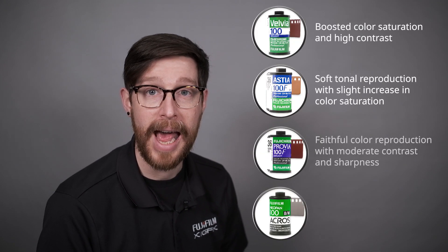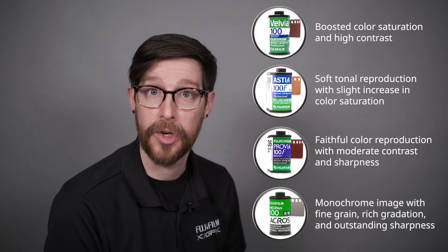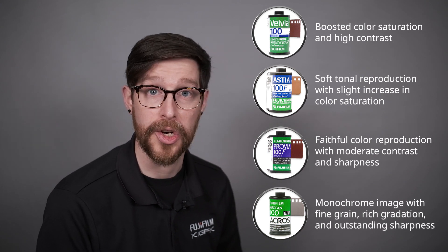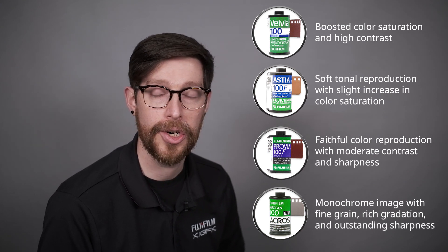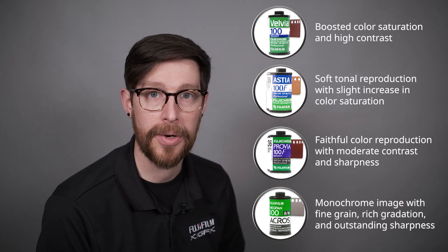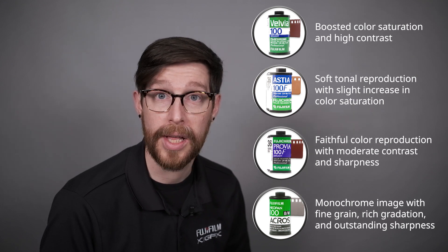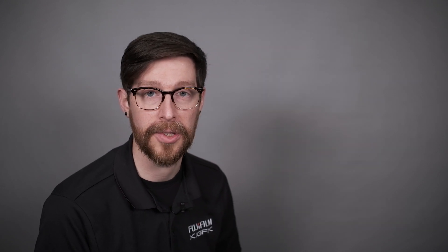A film simulation is basically a color palette that you pick based on your subject, and ours is based off of our film stock. You might be familiar with terms like Velvia, Astia, Provia, and Acros. Each one of these will change saturation, highlight tone, shadow tone, sharpness, as well as noise reduction, among other things.